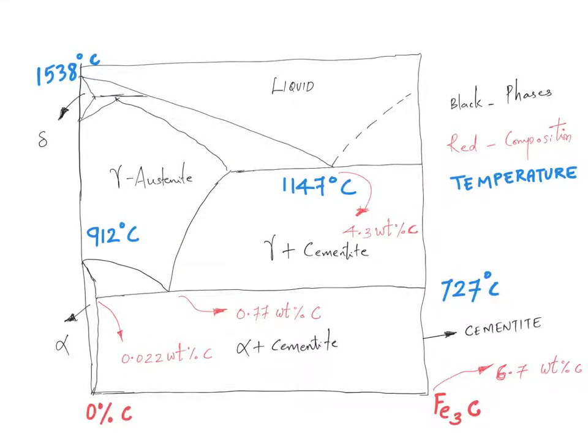So here is the phase diagram. It looks a bit clumsy but I will explain all these things step by step. Starting off with the axes, on the x-axis we have the composition of carbon. This particular extreme corresponds to 0 weight percentage of carbon, and this corresponds to 6.7 weight percentage of carbon.